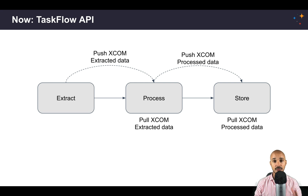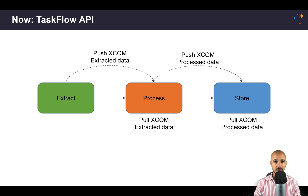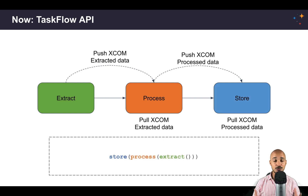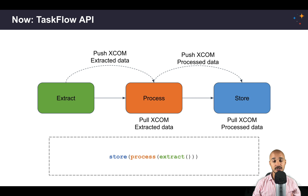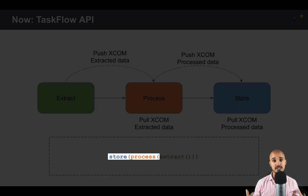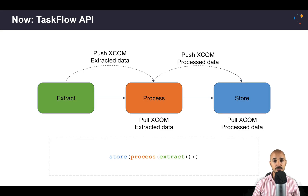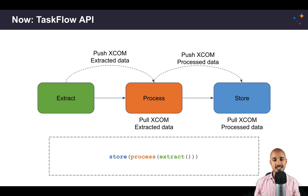With the Taskflow API you still have the same data pipeline with the tasks extract, process, and store. But the big difference is that you won't need to use the methods xcom_pull and xcom_push anymore. Basically, to show that you share data between two tasks, you use one task as a parameter of another. For example, the task extract pushes an XCOM and as we want to pull that XCOM from the task process, we put extract as a parameter of process — and the same for store. By using this new notation, it is more natural to define dependencies between your tasks and you explicitly show that your tasks are sharing data.